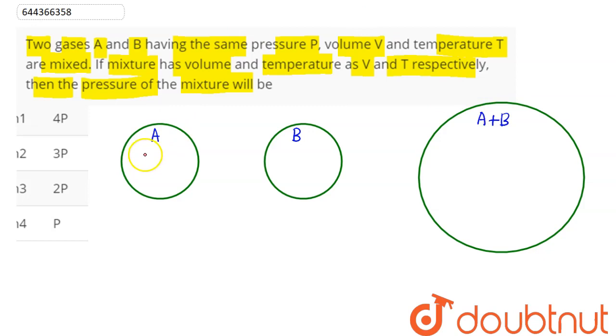Here it is being said it has pressure as P, volume as V, and temperature as T. This is also pressure P, volume V, temperature T. Both mixed here. So we can say, as we know, ideal gas equation is given as PV equal to nRT.